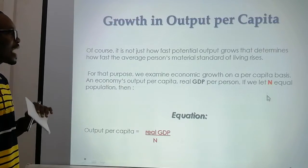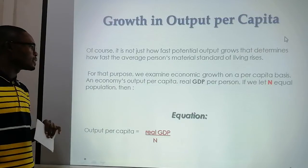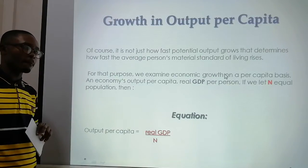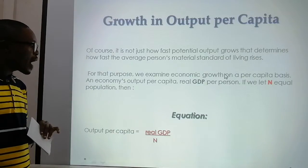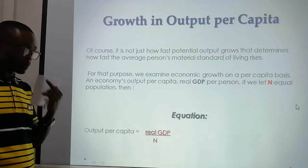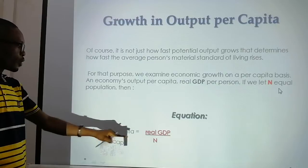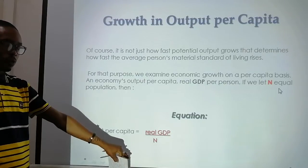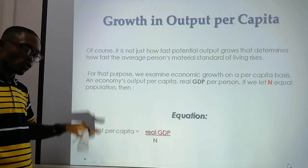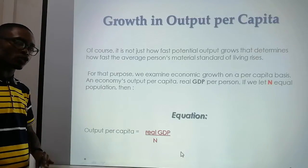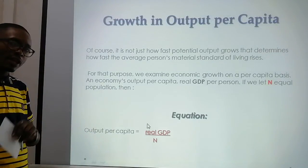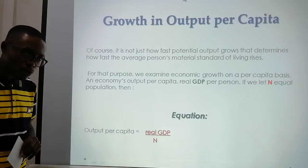If we let N equal population, then the equation for calculating output per capita is: divide real GDP by the number of people within the economy — the population. If you want to find output per capita while estimating population growth, the formula is real GDP — the gross domestic product, not gross national — divided by the number of people living in the country.